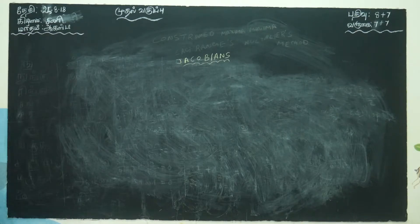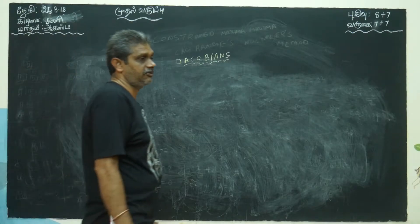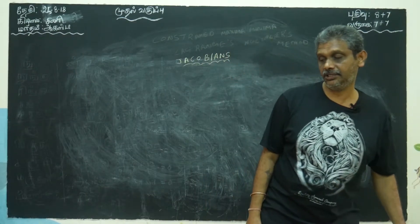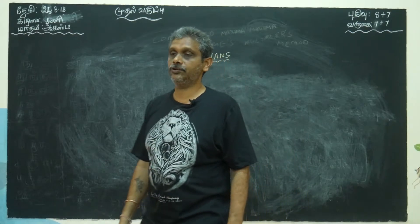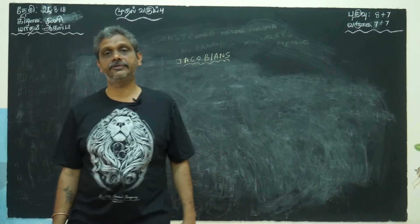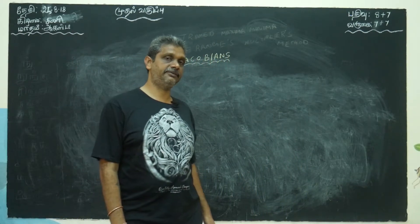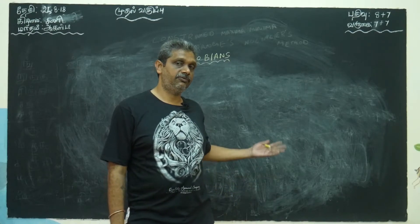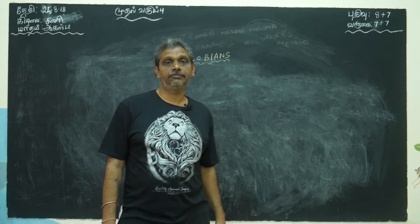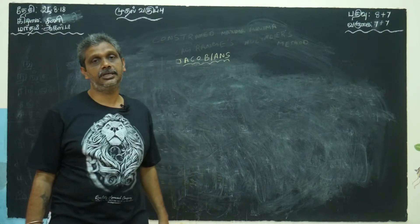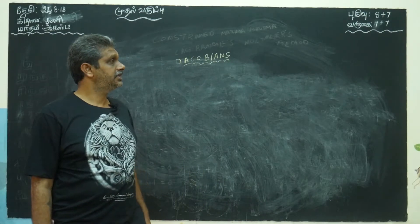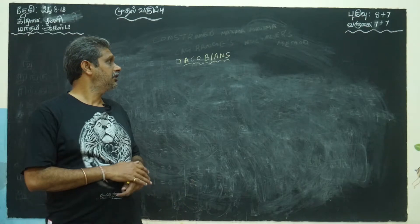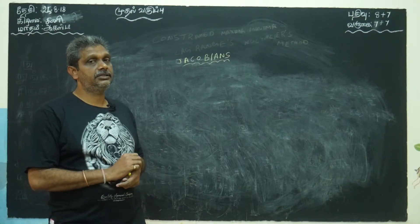Last class we discussed functions of several variables. Inside that topic we covered total differential coefficients, total differentiation, implicit functions containing one relation, maxima and minima with functions of two variables, and maxima and minima with constraints using Lagrange's multipliers. Now the next topic is Jacobians.